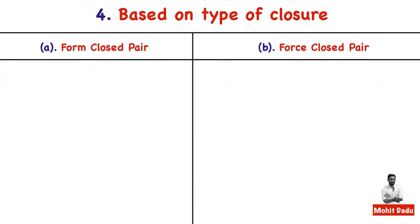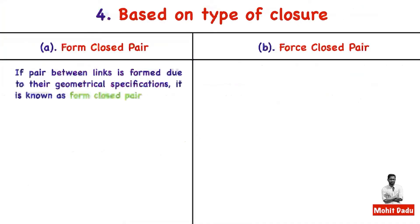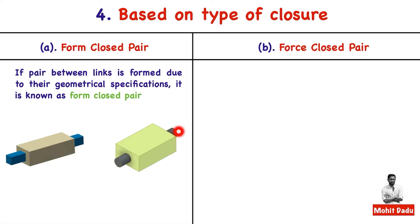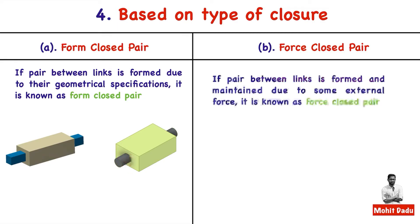The fourth classification is based on closure, with two types: form closed pair and force closed pair. A form closed pair is formed and maintained due to the geometric shape of the links. For example, a rectangular bar in a rectangular slot and a shaft in a circular hole both maintain contact because of their geometry.